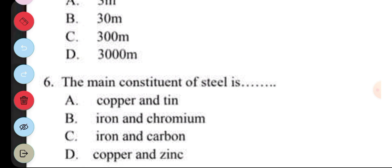Question 6. The main constituents of steel is: A. Copper and tin. B. Iron and chromium. C. Iron and carbon. D. Copper and zinc. The answer to question 6 is C, iron and carbon.